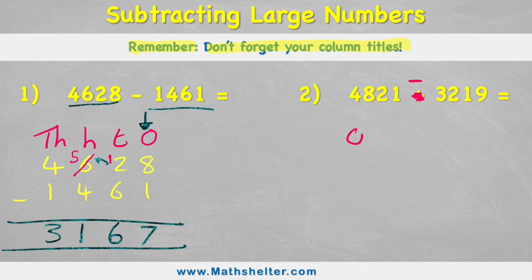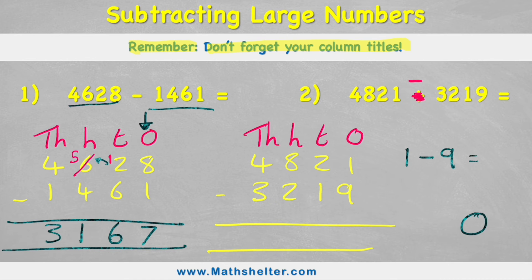So let's put my titles in place: ones, tens, hundreds, and thousands. And I can see I have four thousand eight hundred and twenty-one subtract three thousand two hundred and nineteen. Put my answer row and I'm ready to begin. And straight away I can see a problem because my first question is one subtract nine. Well, if I have one apple, can I take away nine? No I can't.